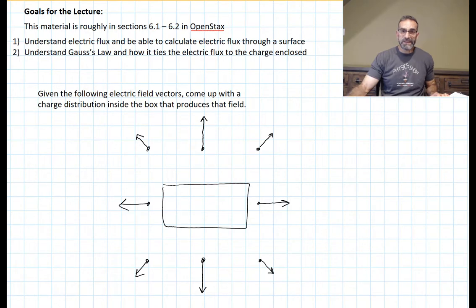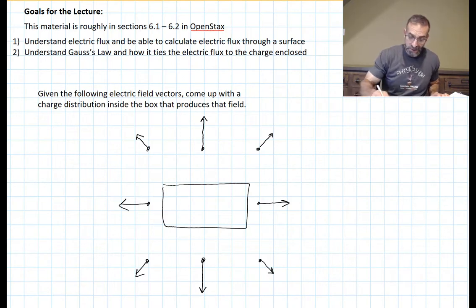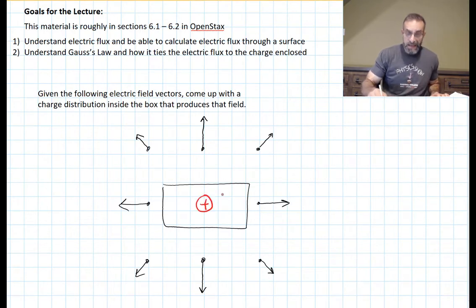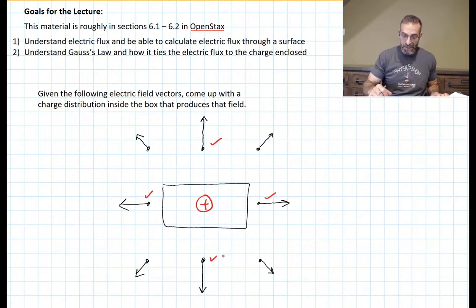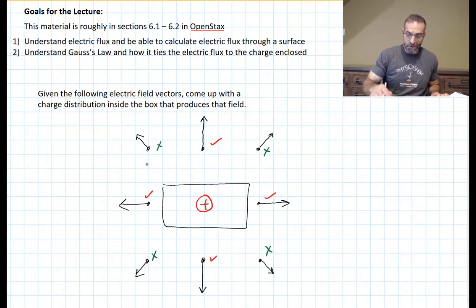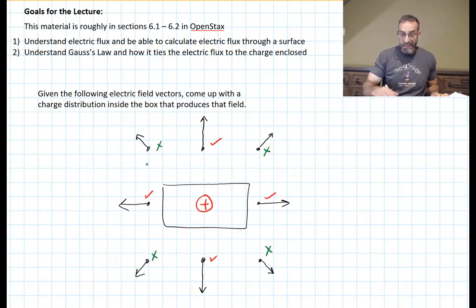These electric field lines all look like they're radiating from one point in the center of the box. It appears that we could put one charge at the center of the box and it would produce this electric field. These four are all the same distance away, so the electric field vector would be the same length and the same strength at each of those locations. These four are a little farther away, so their electric field would be a little smaller due to the extra distance from the point charge. I think a point charge at the center of the box would be a good approximation of a charge distribution that would produce this electric field.